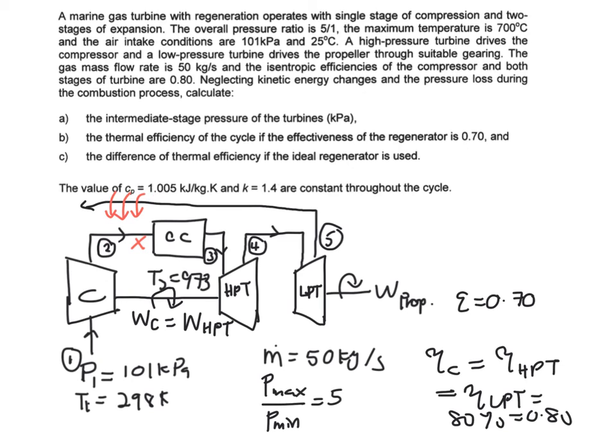So you need to compare the answers that you got from here with this one. And it says here the value of CP and your k is constant throughout the cycle. Meaning that even though after your combustion process if it's going to have CP or k you are going to use the same value. You don't have to find the output product, the gas product specific heat at constant pressure or this k value. It's going to be all the same throughout the cycle.